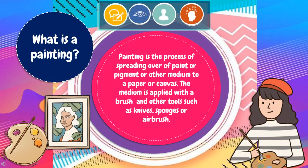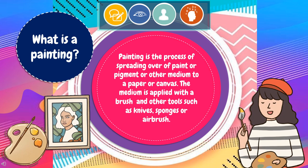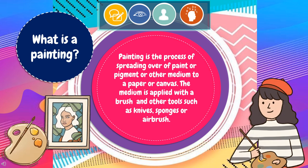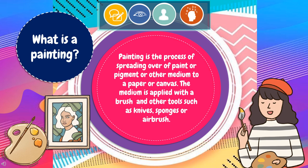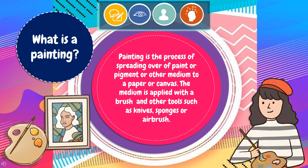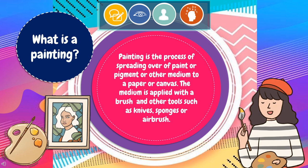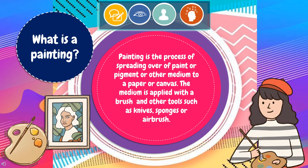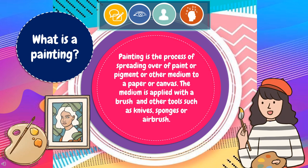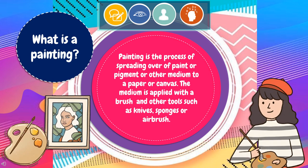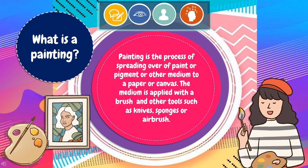We keep on talking about painting, but what do we understand and know about painting? Let us define painting. Painting is the process of spreading paint, pigment, or other medium over paper or canvas. The medium is applied with a brush and other tools such as knives, sponges, or airbrush.